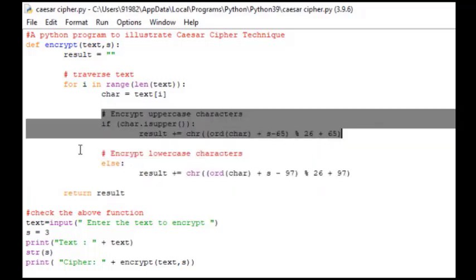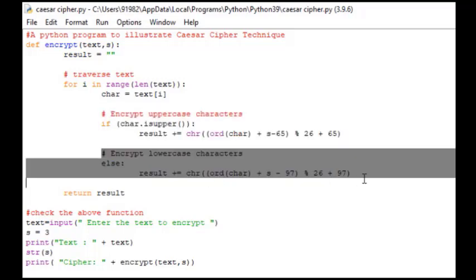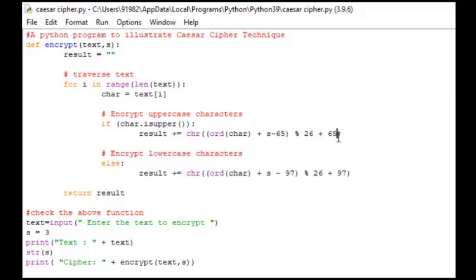We have used this part for the uppercase and this else part for the lowercase. For instance, capital A is represented by the number 65, B by 66, and so on. You can see minus 65 is used for that purpose. We have used 97 because lowercase character representation begins with the number 97.